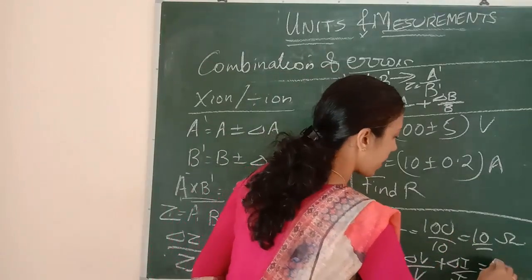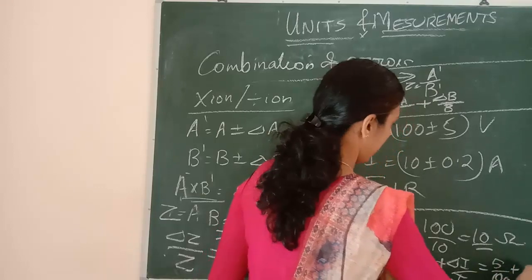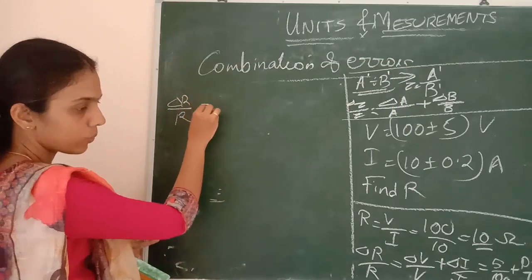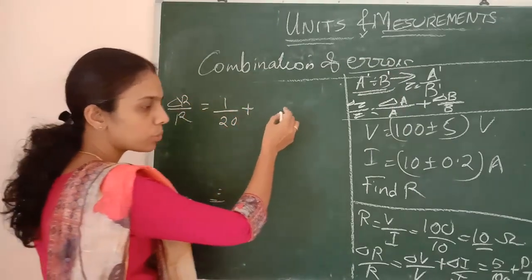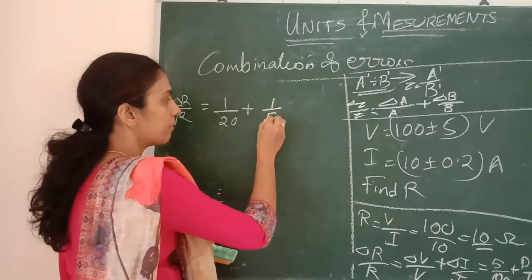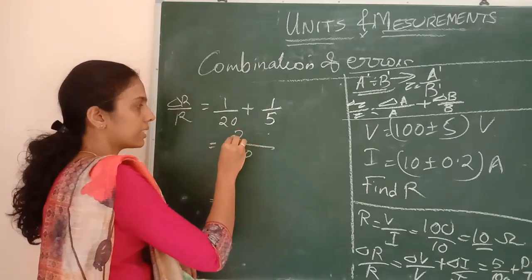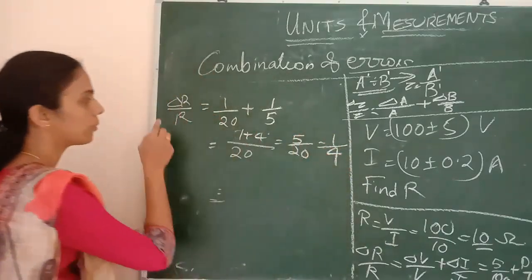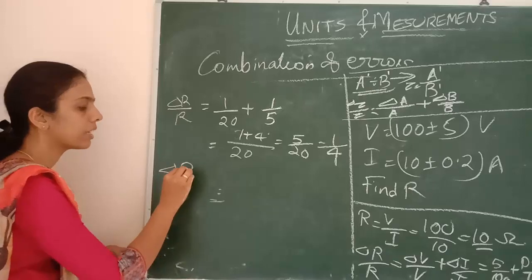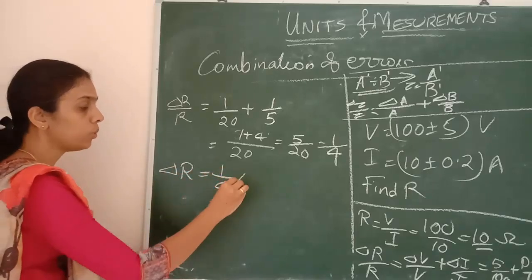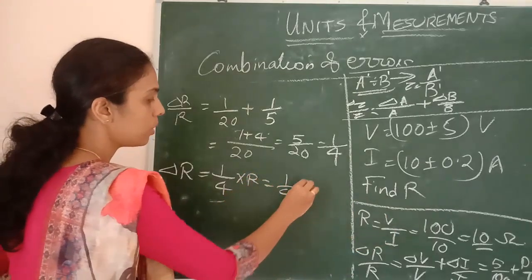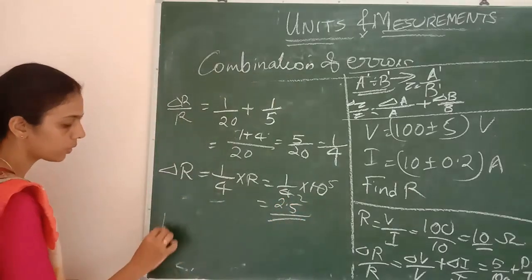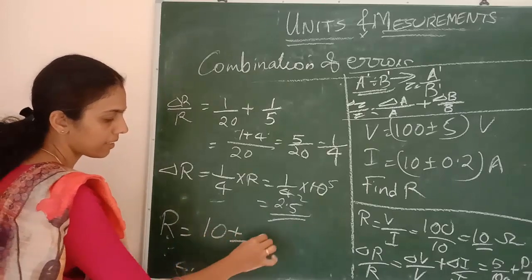The resistance formula is V by I. The true value is 100 divided by 10 equals 10 ohm. Then delta R by R equals delta V by V plus delta I by I. So we get 5 by 100 plus 0.2 divided by 10, which equals 1 by 20 plus 1 by 50. Taking LCM of 100, we get 5 by 100 plus 2 by 100, so delta R by R equals 1 by 4. Therefore delta R equals 1 by 4 into 10 equals 2.5.